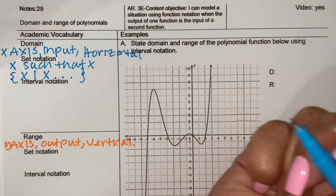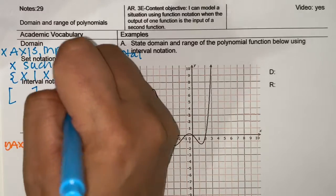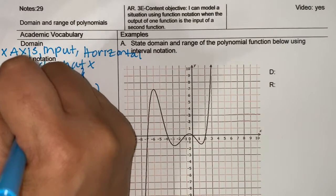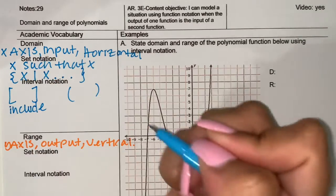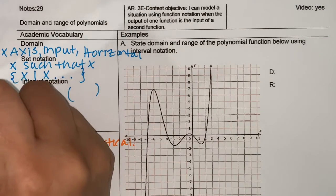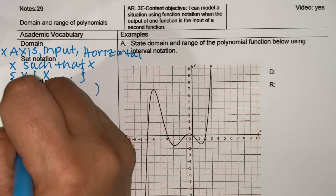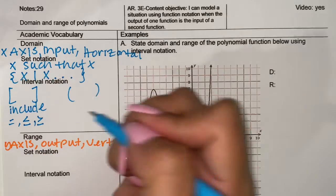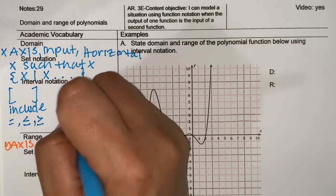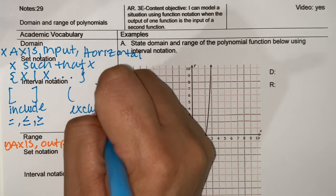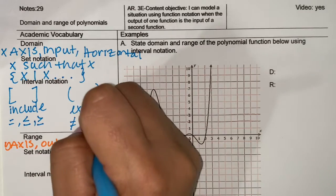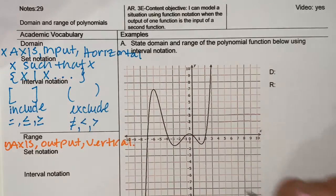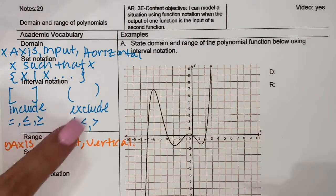And then interval notation — you have the brackets, and then you have parentheses. The brackets mean to include, and the symbols for include are going to be equal, less than or equal to, and greater than or equal to. And then the parentheses mean to exclude — that's going to be not equal to, less than, or greater than. So you have three different symbols you can use for interval notation.